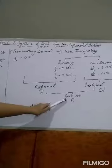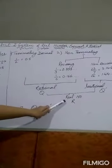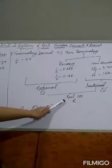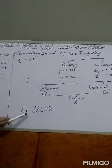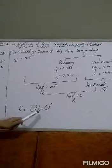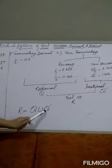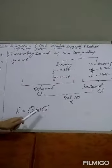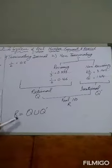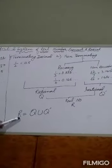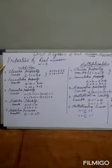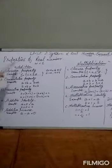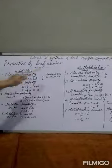This gives us another definition of real number: Real number equals rational number union irrational number. Now let us talk about the properties of real numbers. Properties of real numbers can be classified with respect to addition and multiplication.